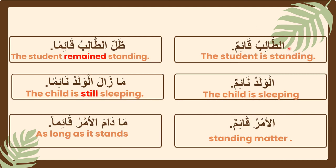Next: الطالبُ قائمٌ — الطالبُ is مُبْتَدَأ and قائمٌ is خَبَر. When ظَلَّ enters the sentence, مُبْتَدَأ changes to إسمُ ظَلَّ. So الطالبُ is إسمُ ظَلَّ and قائمًا is خَبَرُ ظَلَّ.